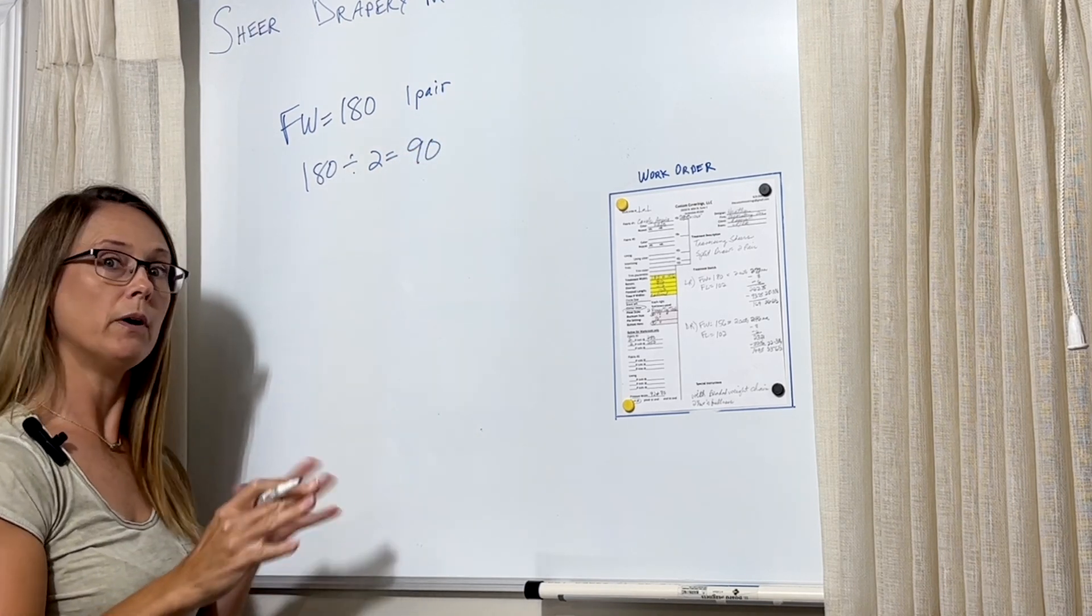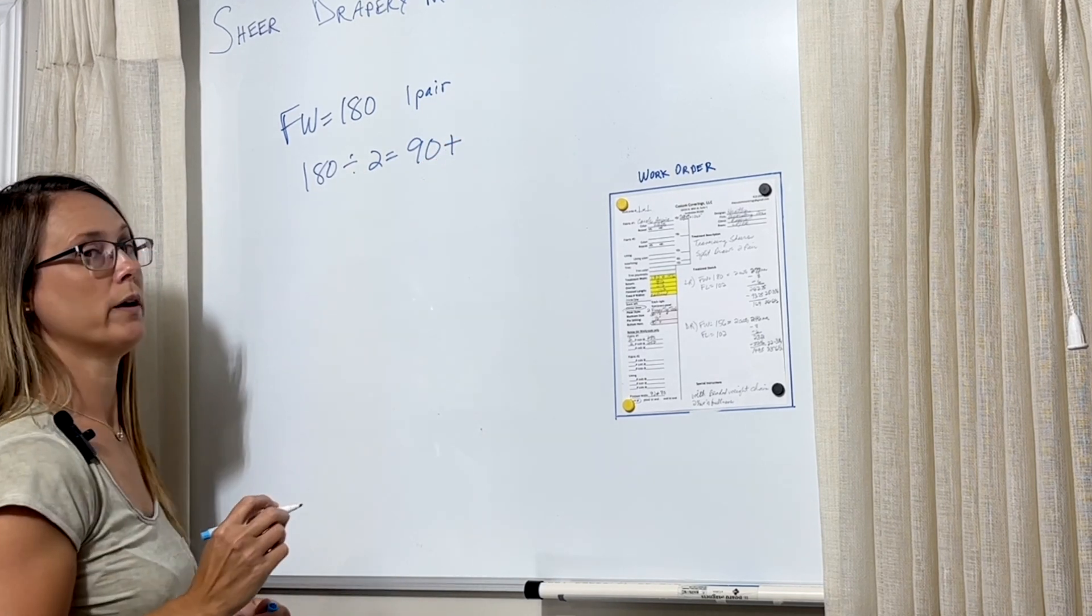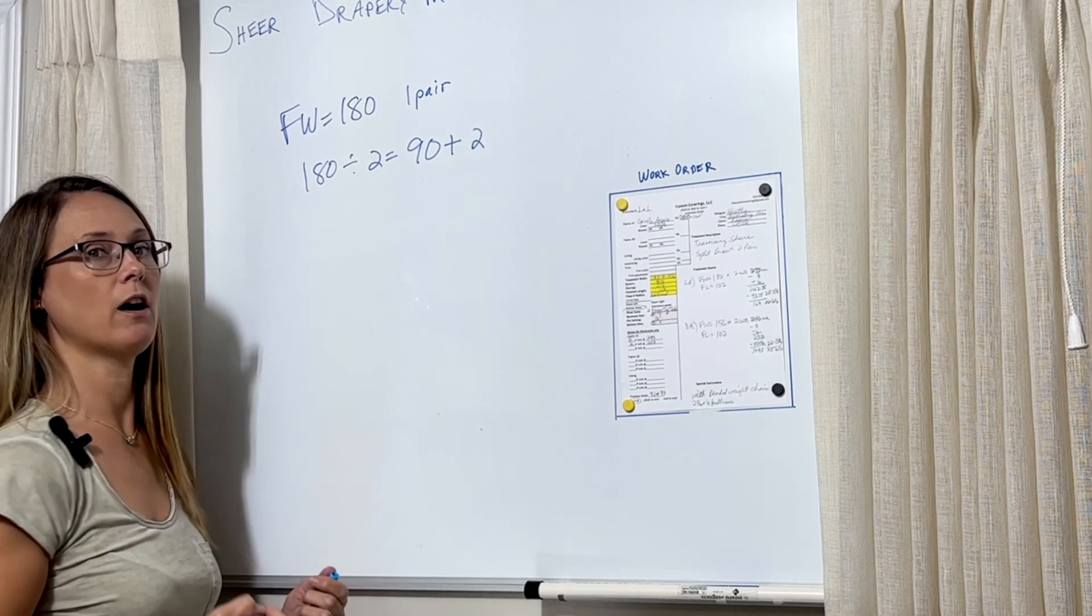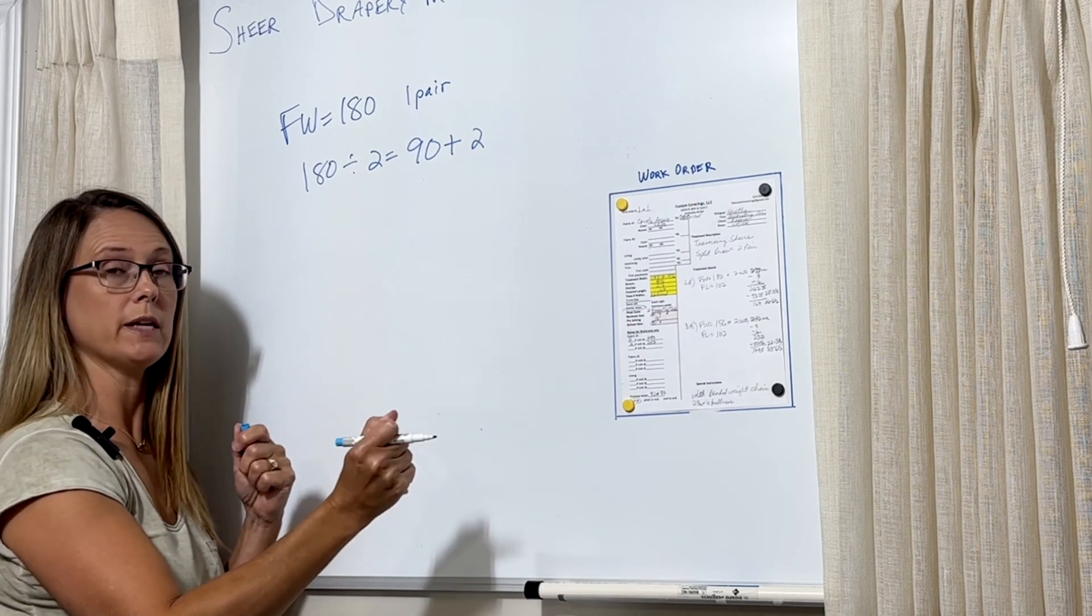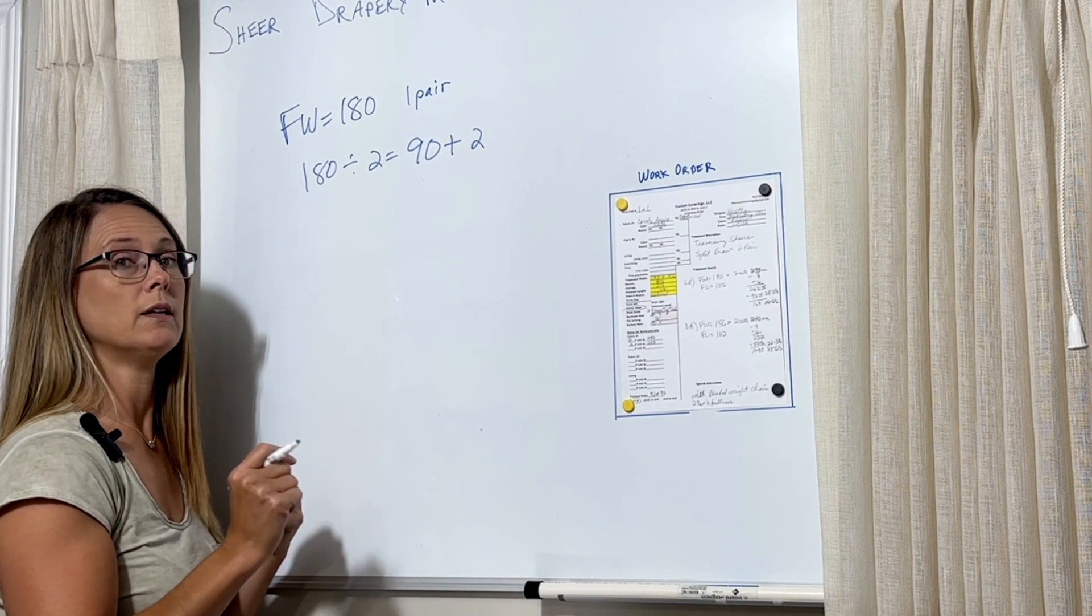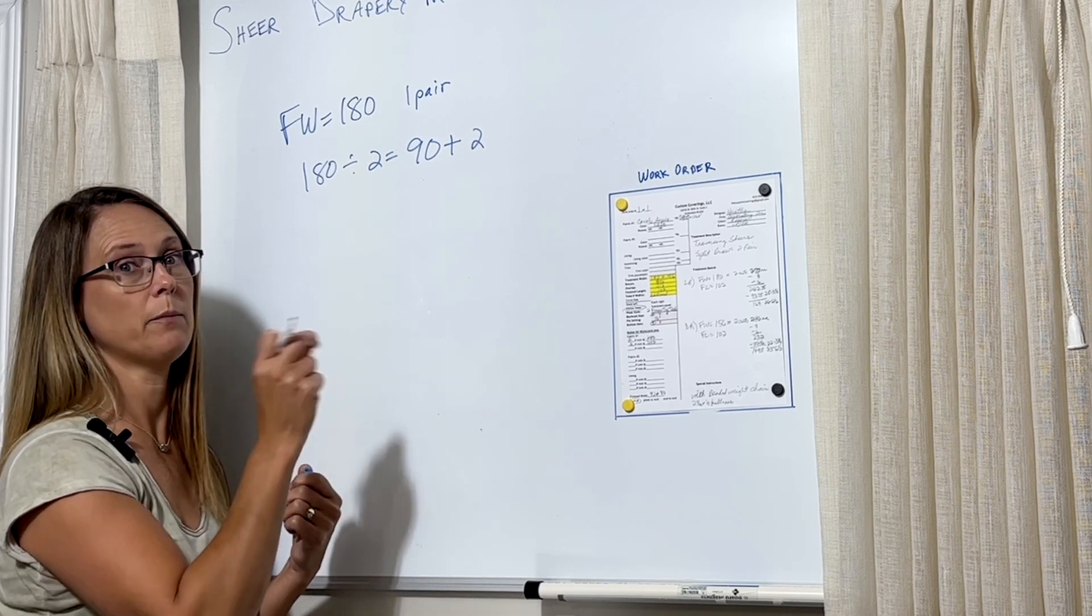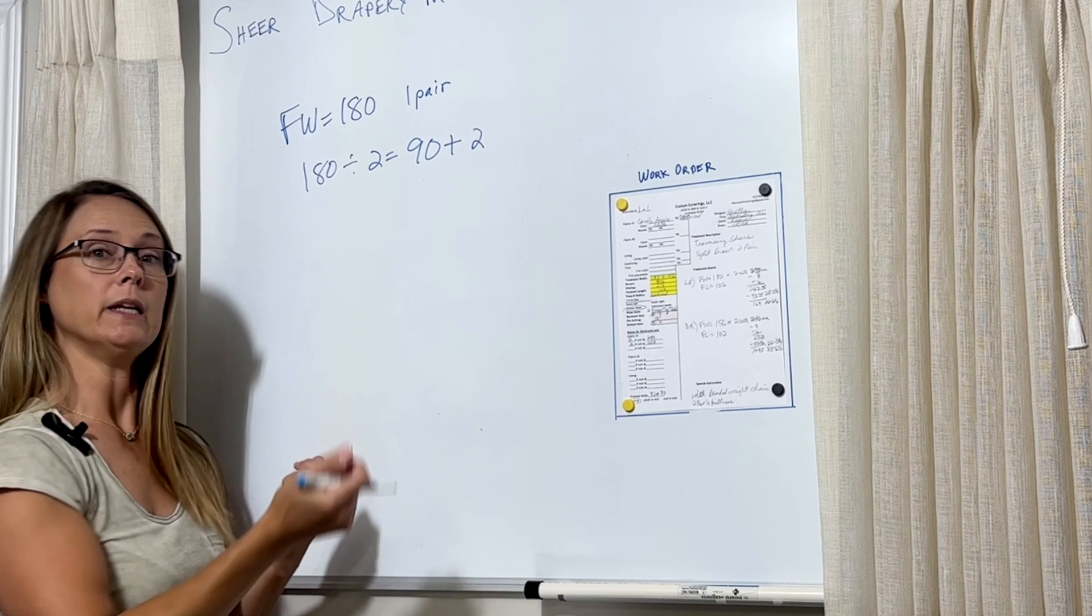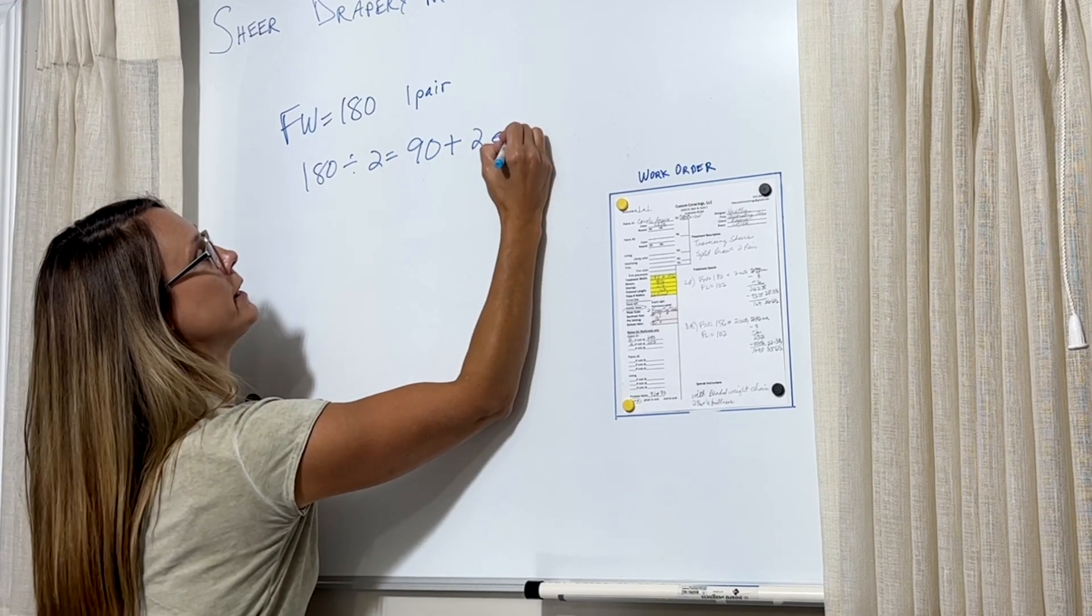So each panel needs to minimum fit 90 inches of the rod space. Because we don't want to max out the minimum, we want to have a little play. I like to add two inches of what I call ease to each panel so that it's not going to be too short. Because after you stitch up all the pleats, if you figured it to exactly 90 inches, you could be a little short. Because during sewing fabric, you could have a lot of take up or even a little bit of take up on each pleat. It will end up costing you some inches where you might end up at 89 or 88.5 and it's not going to reach the middle of the rod. So that's what the two inches is for, and I call that ease.